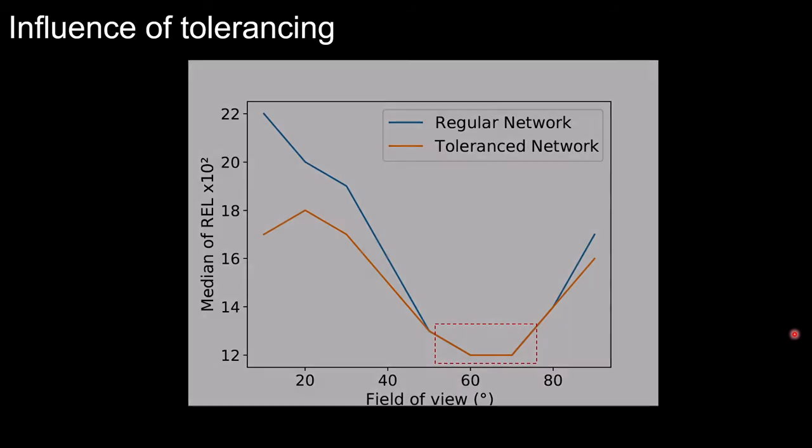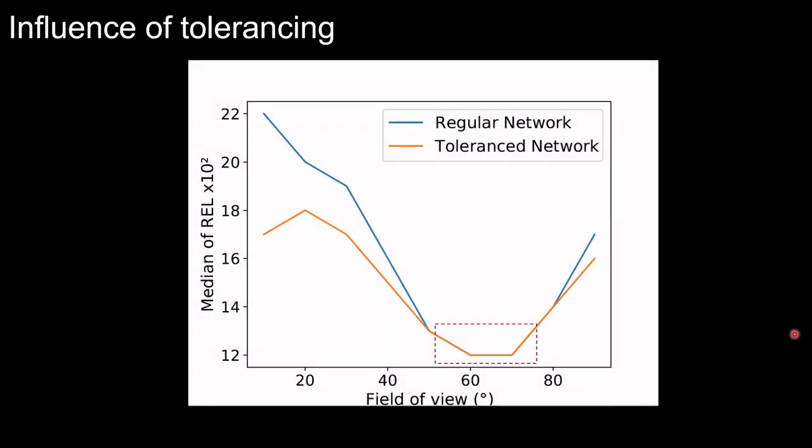We can observe the best accuracy is obtained in the area of increased pixel density for both networks within the red square. And even if the network trained with varying distortion performs better, both networks are robust to manufacturing tolerances.